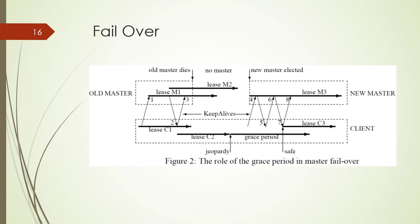Once the client has contacted the new master, the client library and the master cooperate to provide the illusion to the application that no failure has occurred. For this purpose the new master must reconstruct a conservative approximation of the in-memory state that the previous master had. The newly elected master proceeds with basically nine steps. The first is it picks a new client epoch number, which clients are required to present on every call. The new master may respond to master location requests but does not at first process incoming session-related operations. The third step is it builds in-memory data structures for sessions and locks that are recorded in the database.